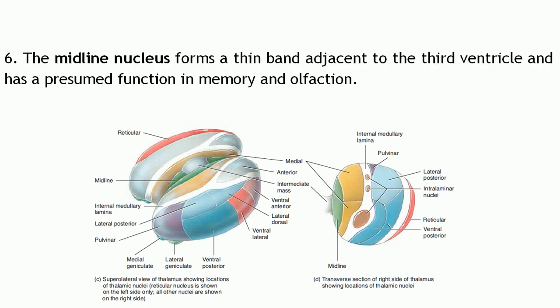The sixth is the midline nucleus — a thin band of gray matter adjacent to the third ventricle — mainly playing a role in memory and olfaction. Olfaction is the sense of smell, and this is mediated through the midline nucleus.